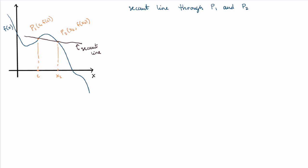So I'll focus on calculating the slope. So the slope I'm gonna call m p1, p2. So what is this? This is rise over run, so it's the difference in y coordinates, so f of x2 minus f of c, over the difference in x coordinates, so x2 minus c.